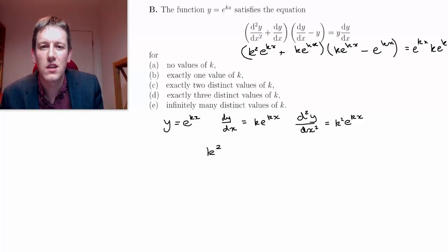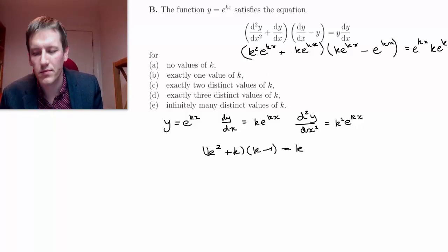So they'll cancel out with the two e to the kx's on the other side. So actually the equation we're looking at is just k squared plus k multiplied by k minus 1 from these two brackets is equal to k.